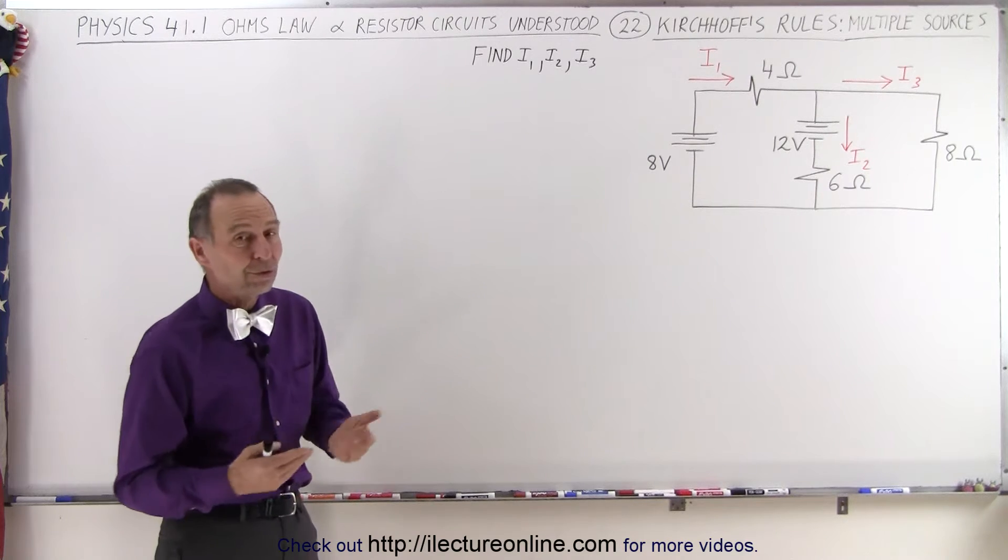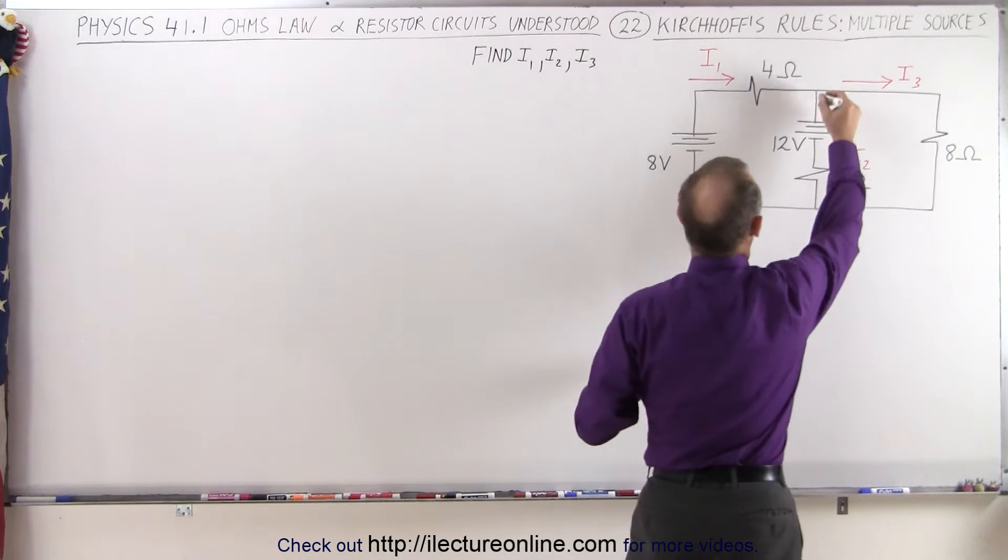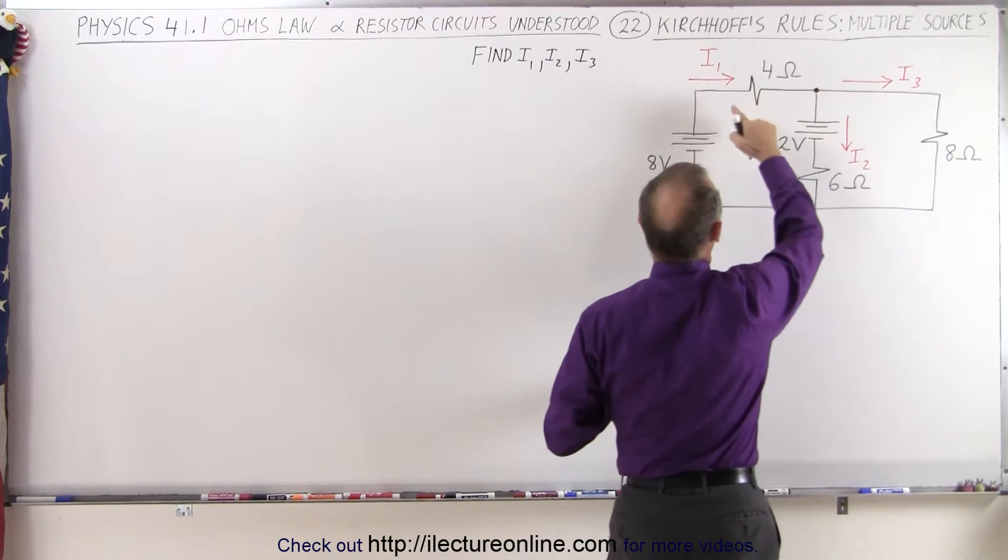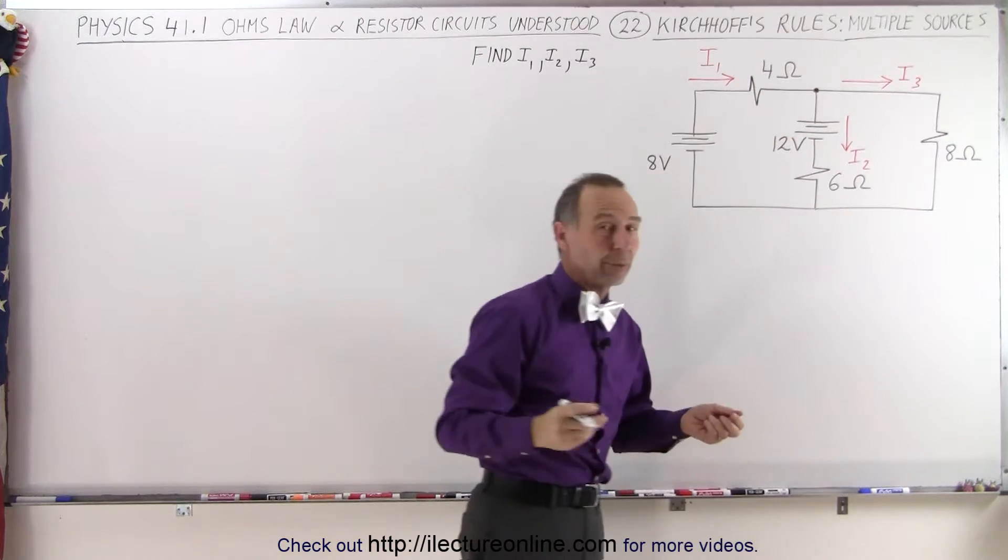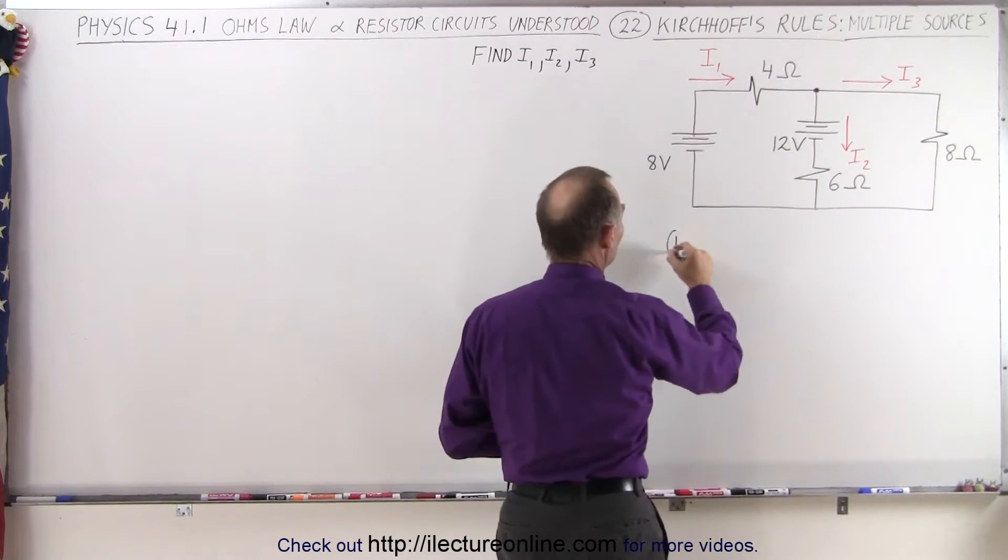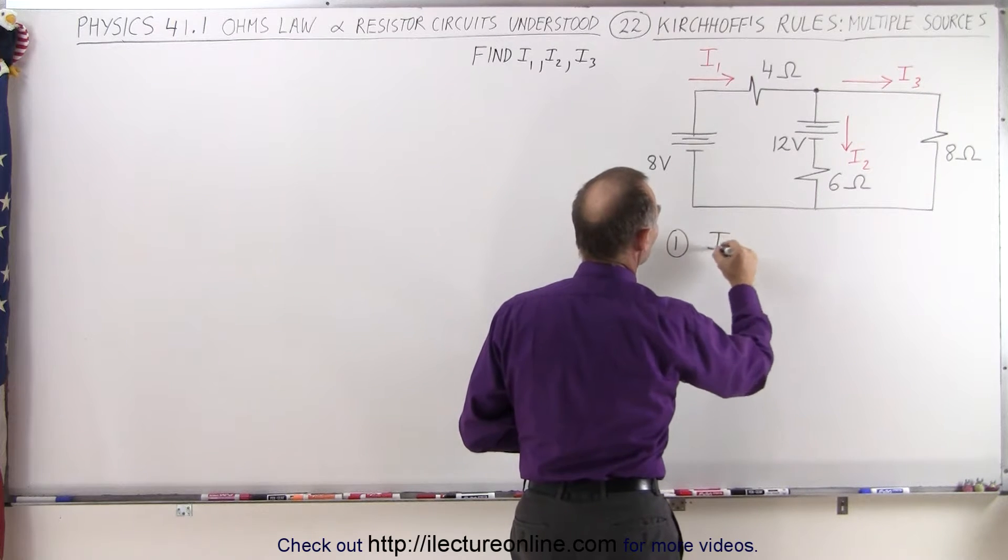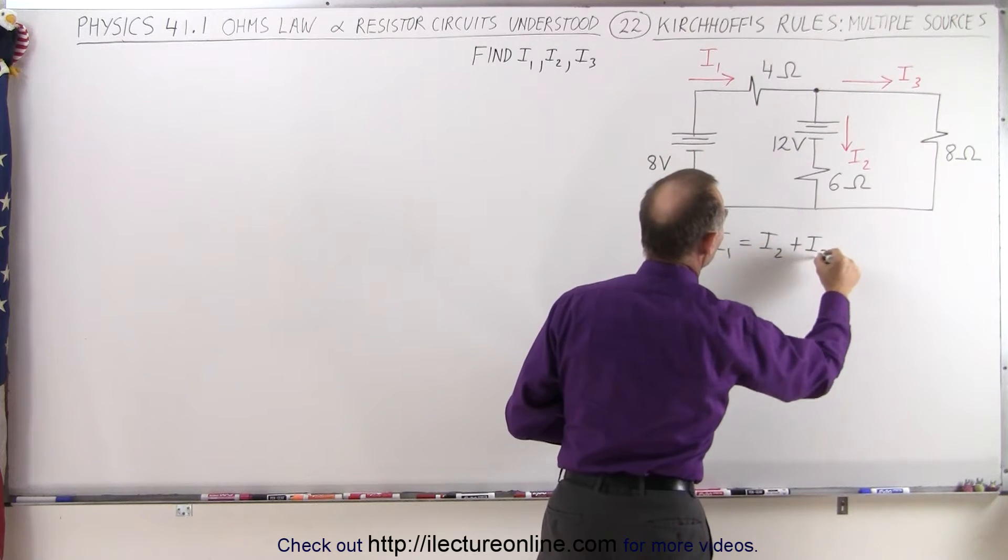The first thing we'll want to do is use the first rule where we find a branch point. Let's take this point right here. We're going to add up all the currents entering the branch point and all the currents leaving the branch point and then set that equal to each other. So in this case, for the first equation, we can see that I1, which enters that branch point, equals I2 plus I3.